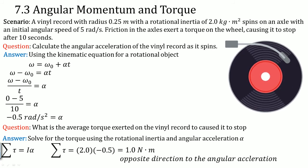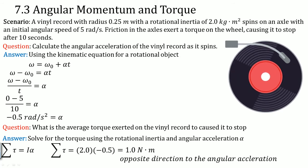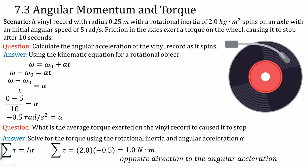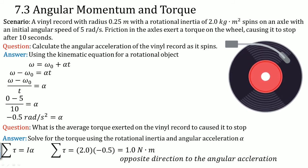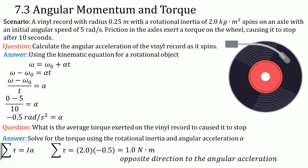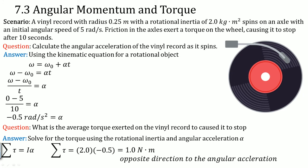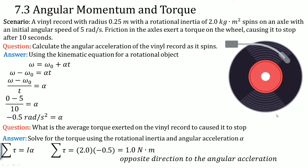The reason the answer is written without a negative sign is because it's stated in words: 1.0 newton meter in the opposite direction of the angular acceleration. The negative simply indicates it acts in the opposite direction, causing the record to slow down. Notice that there must be a torque in this problem to cause the deceleration, and that torque is found using the angular acceleration from the kinematics equation.